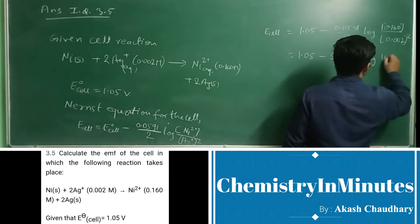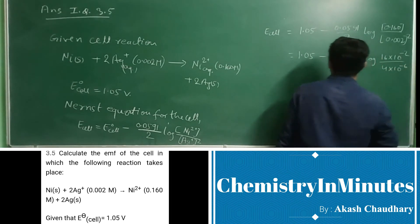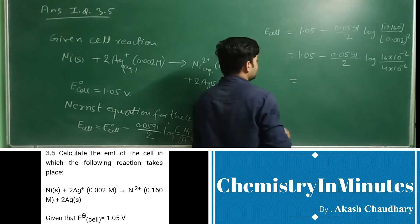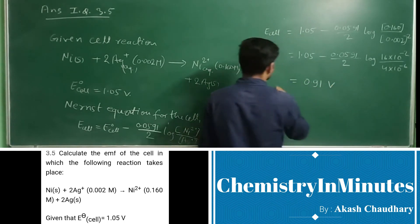This can be written as 16 × 10⁻² upon 4 × 10⁻⁶. On solving, this will get 0.91 V, which is the cell potential Ecell.